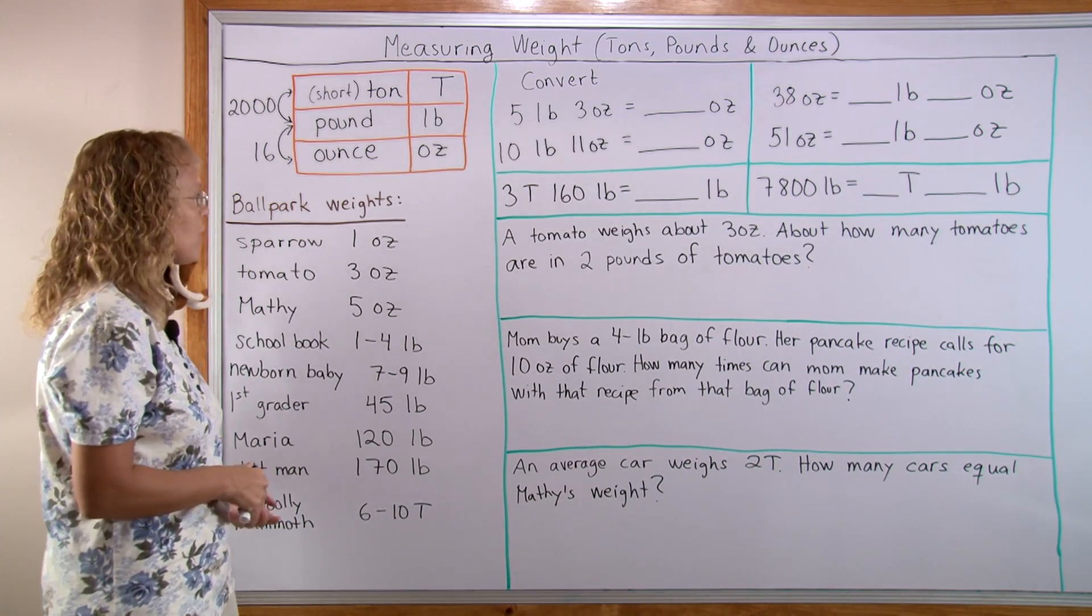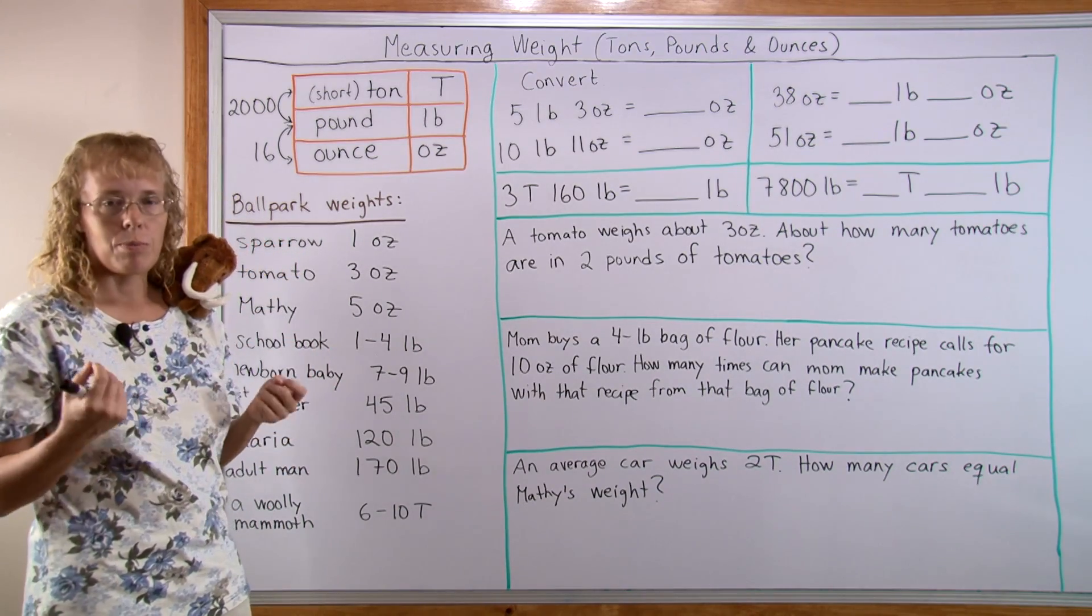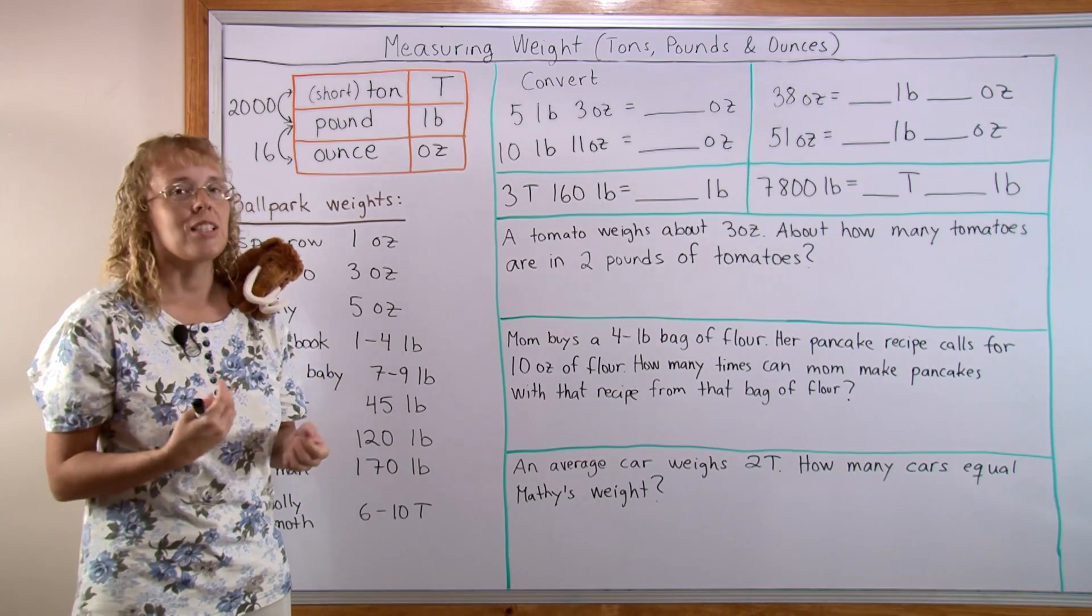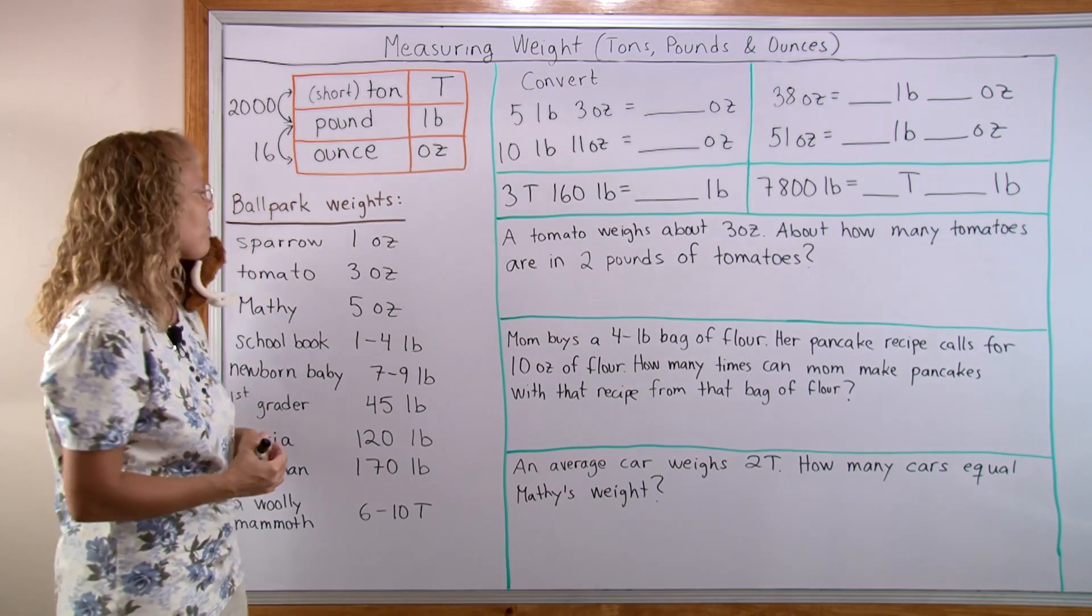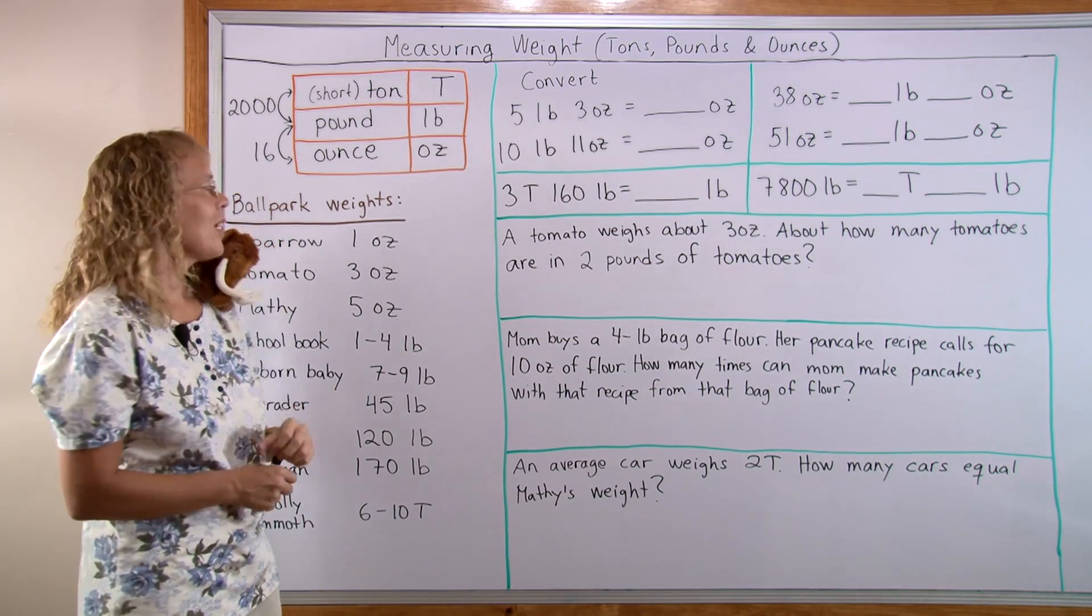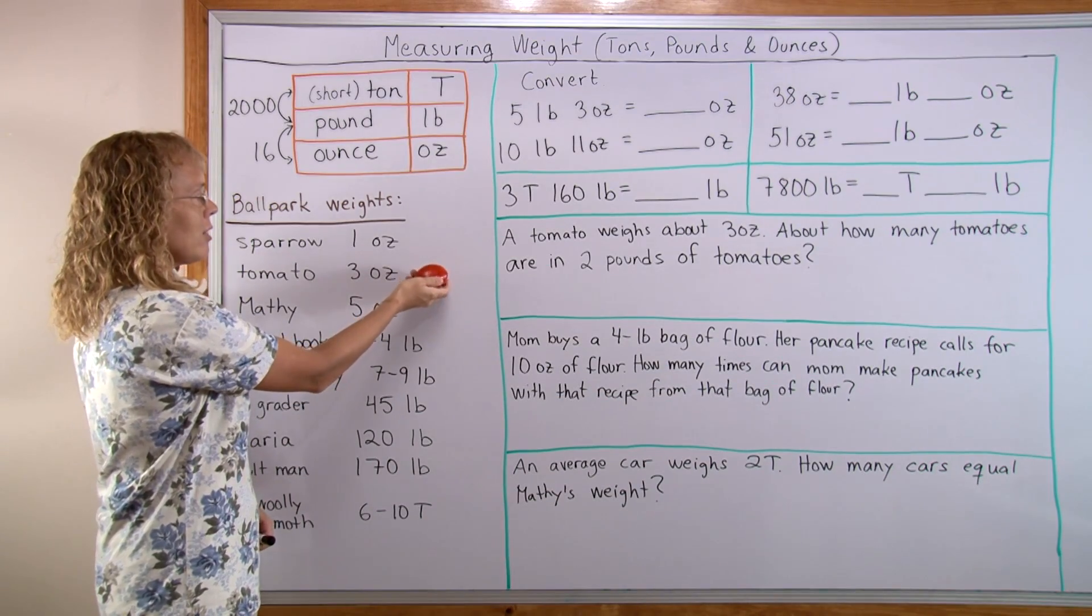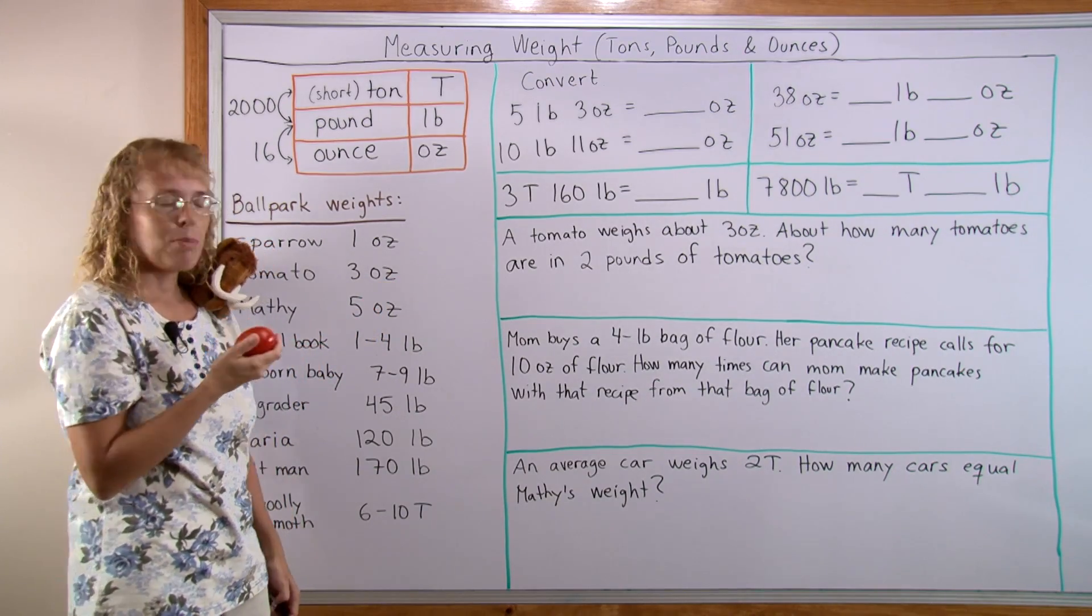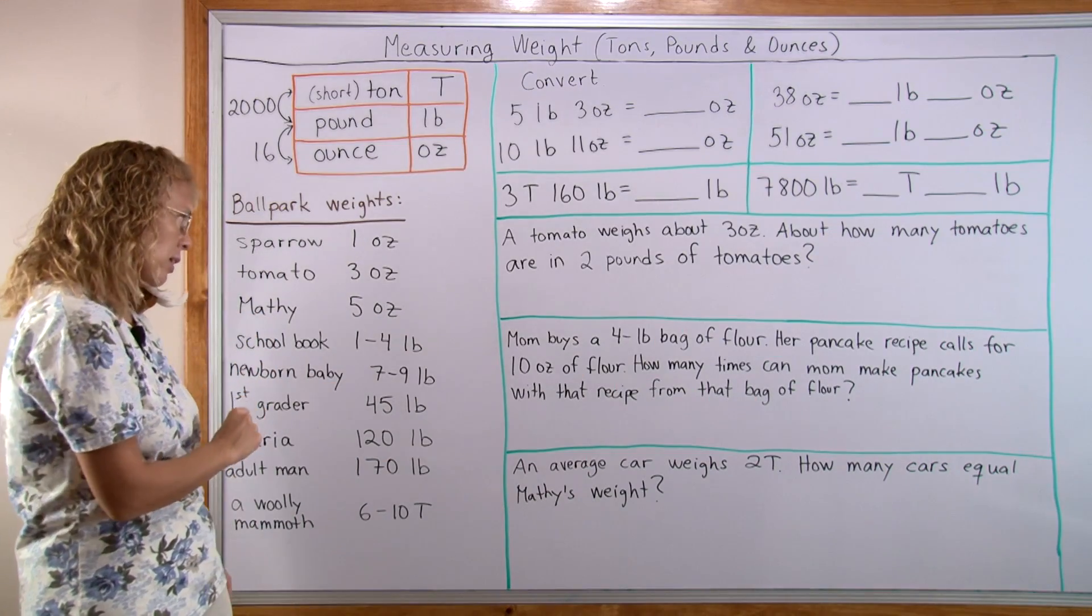Here's a list of ballpark weights to get an idea of how much is an ounce or a pound. Students need to use these units in everyday life to become familiar with them. A sparrow: about one ounce. A typical tomato: about three ounces. Apples would be four ounces, maybe bigger ones five or six. Matthew: five ounces.